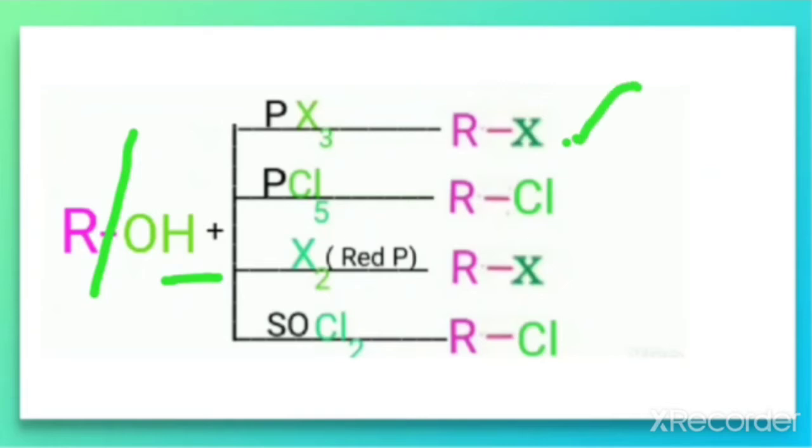Let us talk about the reaction with PX3, that is phosphorous trihalide. With the phosphorous trihalide, when it undergoes a reaction you will get the product R-X, where R is the alkyl group. R-X, that means haloalkane.